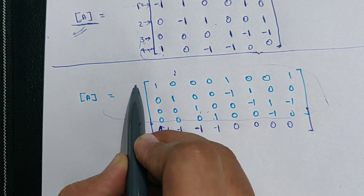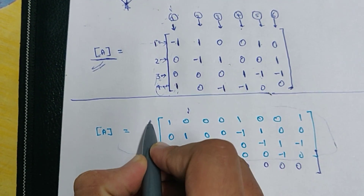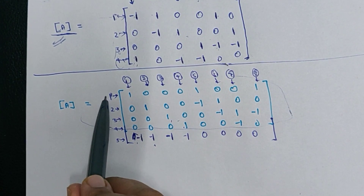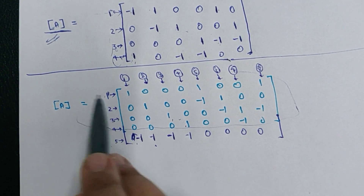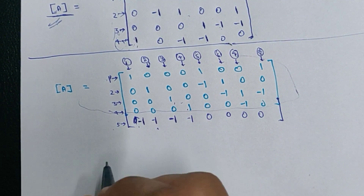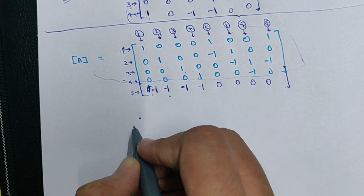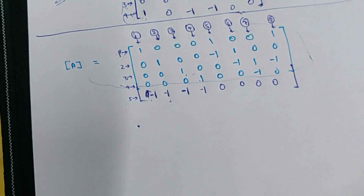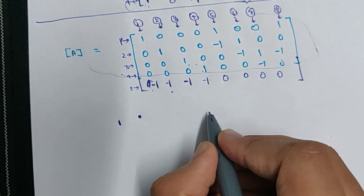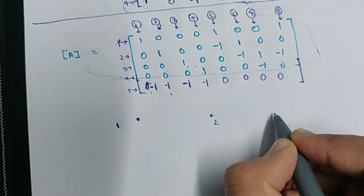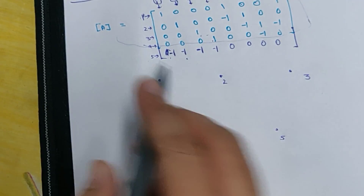For the directed graph, we write the node points along the rows and branches along the columns, as we did before. I have named the first, second, third, fourth, and fifth nodes, and there are eight branches. This is our complete incidence matrix. Now we have to draw a network from this graph. We will put five arbitrary points in the plane — the points can be in any orientation.